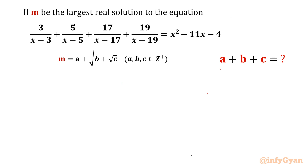Welcome back to Infigyan friends. Today we are going to take up one very interesting and challenging AMI 2014 problem. If m is the largest real solution to the equation 3/(x-3) + 5/(x-5) + 17/(x-17) + 19/(x-19) = x² - 11x - 4, where m = a + √b + √c and a, b, c are all positive integers, then we have to evaluate a + b + c.